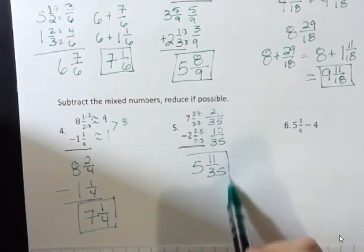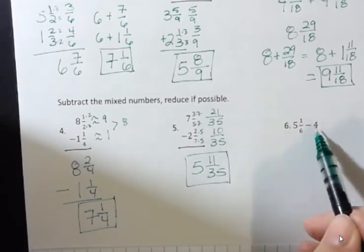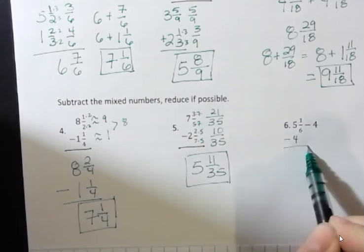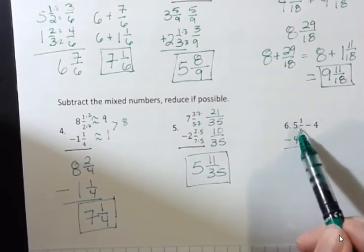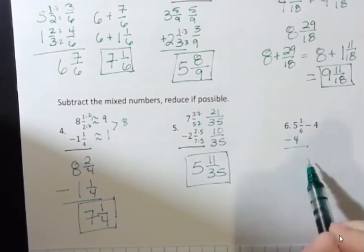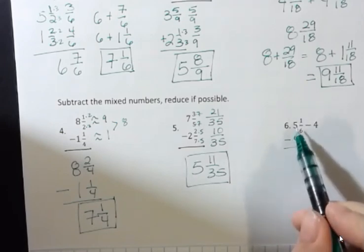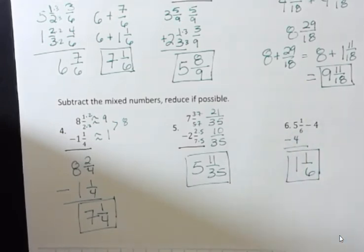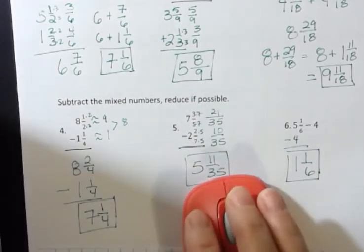What about this one over here to the right? What if I have a fraction and I'm just taking away a whole number? Well, I could write it underneath there. I don't have any sixths to take away, so I'm still going to have five sixths. And then five minus four is one. It's okay to just have whole numbers to work with. We'll continue the rest of this in the next video. Have a great day.